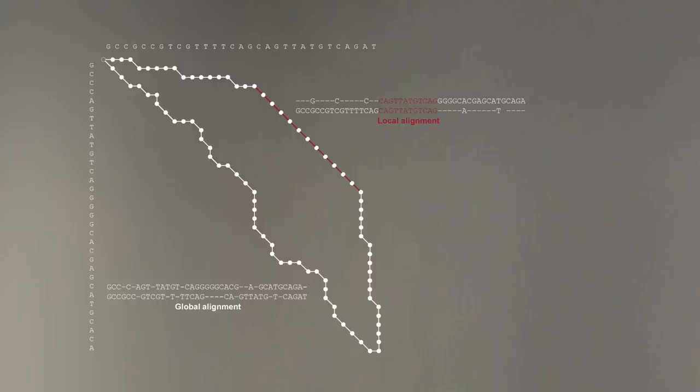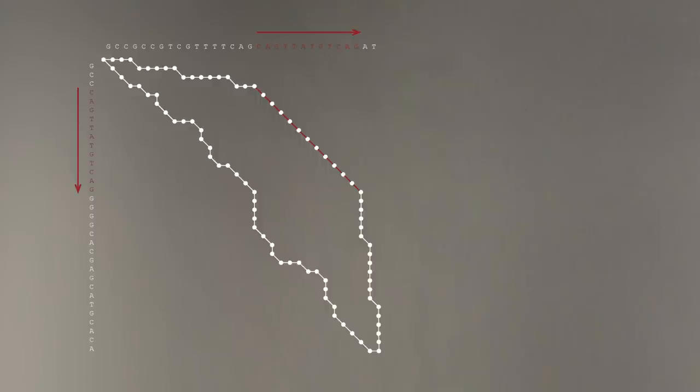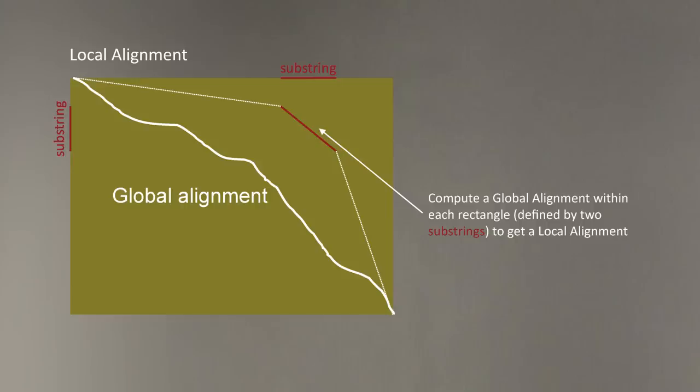So in this case, there are two possible alignments in the alignment graph. The alignment on the top is biologically correct. But the alignment in the middle is actually a random alignment that, however, has a higher score from the perspective of global alignment. And therefore, hides from us the biologically relevant alignment. So what I want to do is to somehow find these short substrings of the entire strings that exhibit high similarity. How do I do this?